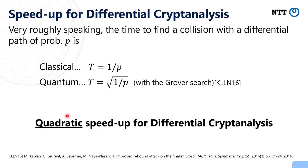Next, I would like to explain about the speedup for differential cryptanalysis. Very roughly speaking, the time to find a collision with a differential path of probability p is 1 over p in the classical setting. But in the quantum setting, this can be sped up to the square root of 1 over p by using Grover search. So very roughly speaking, we can obtain a quadratic speedup for differential cryptanalysis.